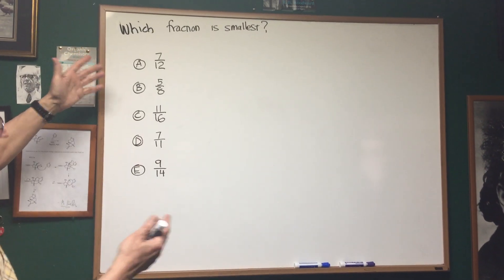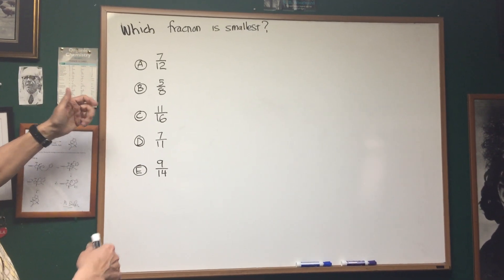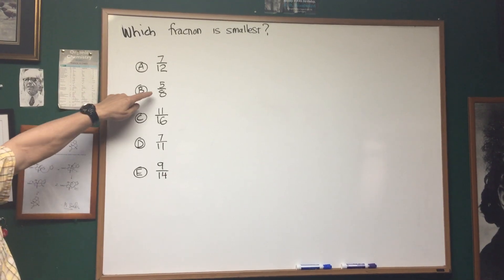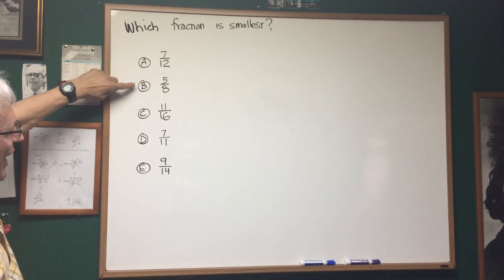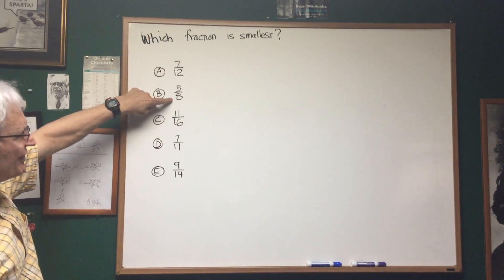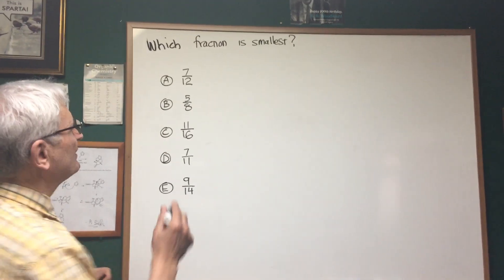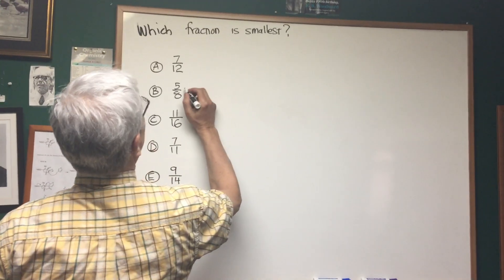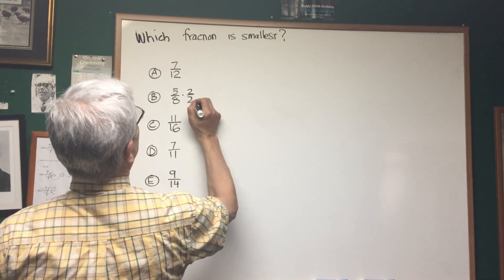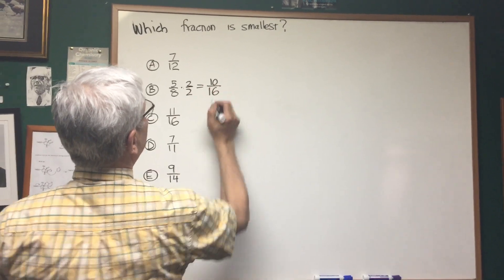Let's take the easiest way, probably the most apparent way, the most obvious way, is to find the common denominator. Look at fractions B and C. You can see that you can find the common denominator for each of those by multiplying 5 eighths by 2 over 2. That gives us 10 over 16.